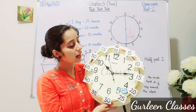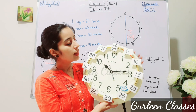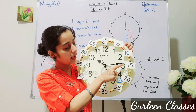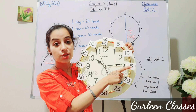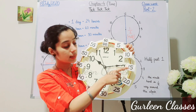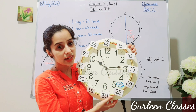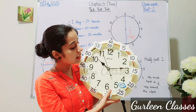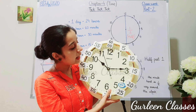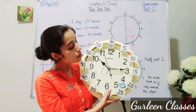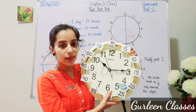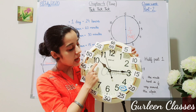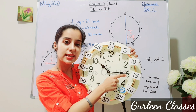The minute hand is at 3, which means 15 minutes. And the hour hand is at 10. So the time is 10 hours and 15 minutes.